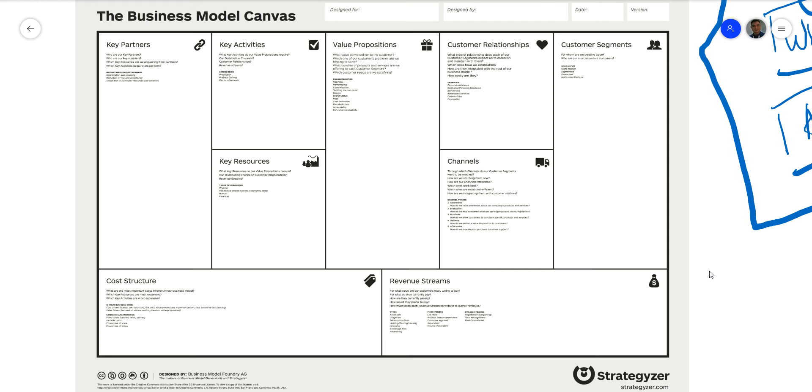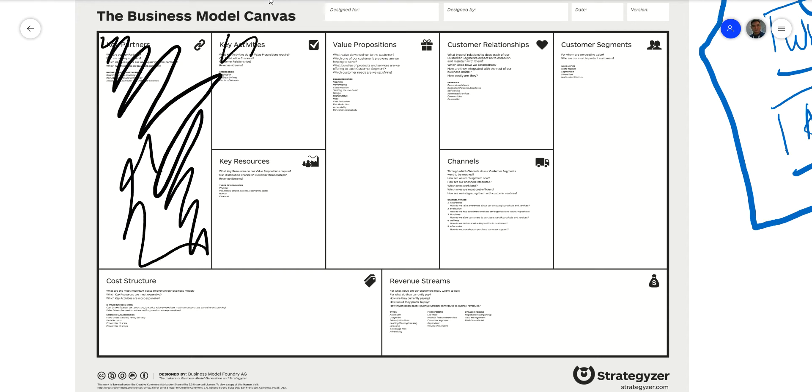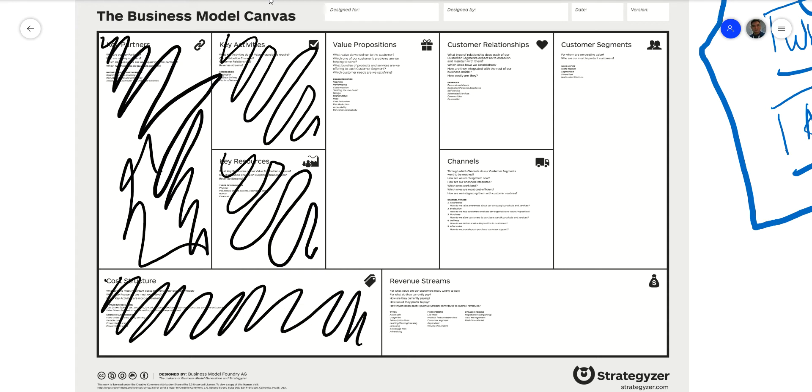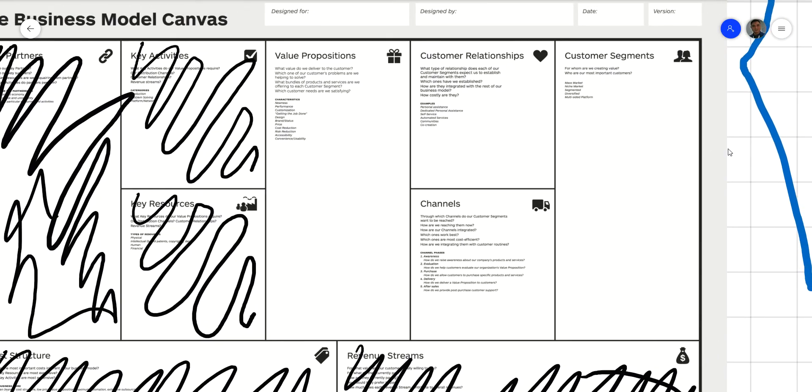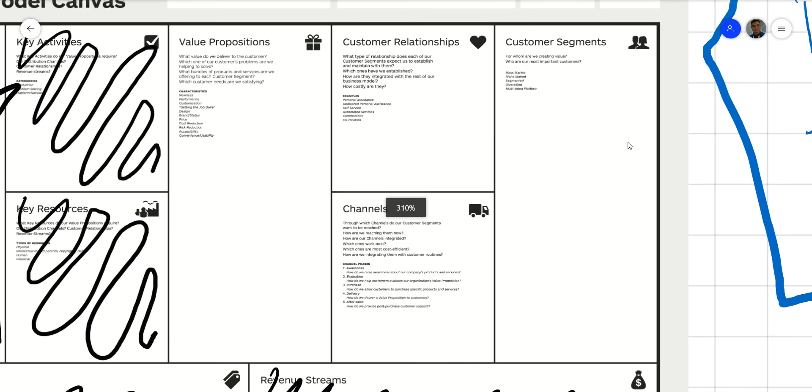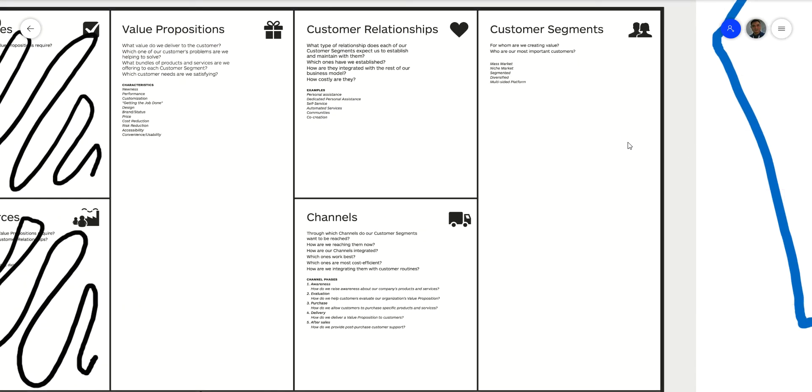Once again, let me cross out things that we are not going to look at. We are not going to look at key partners, we will not be looking at key activities, we are not looking at key resources, we won't be looking at cost structure - this is the money you make - and your revenue stream. However, we will be looking at these four interesting boxes: value proposition, customer relationship, customer segments, and channels.